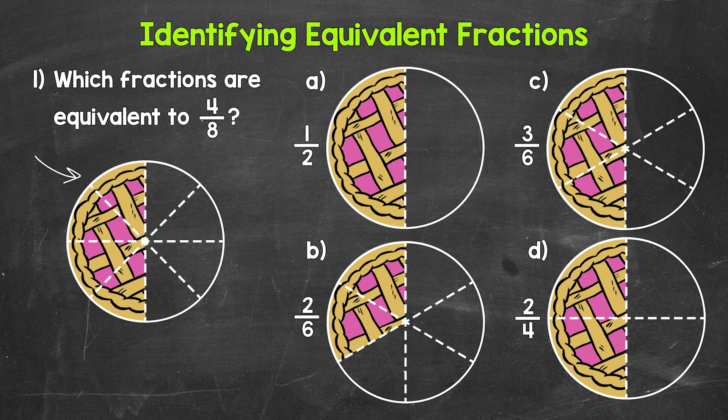Let's start with choice A, one half. Is this equivalent to four eighths? Is the same amount of pie left? Do we have the same part of the whole? Looking at the pictures of the pies, yes, we do have equivalent fractions here. These fractions represent the same amount, the same part of the whole. So four eighths and one half are equivalent fractions.